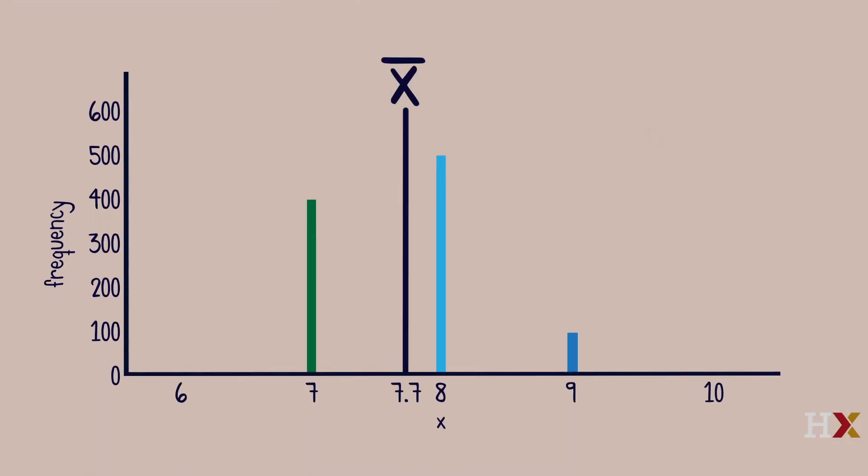The sample mean X bar of random variables X1 through Xn is their simple average, the sum of Xj's divided by n.